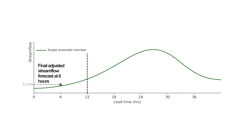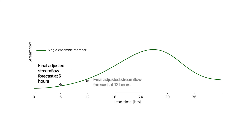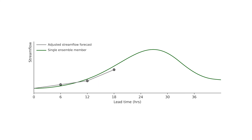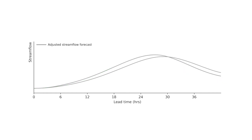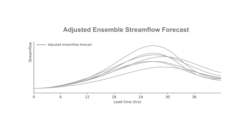Next, we need an adjusted streamflow forecast at 12 hours. Since we do not have a prior observation at 6 hours, we use our adjusted forecast at that time and persist that forward to 12 hours. ONSPOST combines this persisted observation from 6 hours with the streamflow forecast at 12 hours, repeating the process to produce the adjusted forecast at 12 hours. This is repeated for all time steps to generate a complete adjusted streamflow forecast, and the entire process is repeated for each ensemble member, culminating in an adjusted ensemble streamflow forecast.